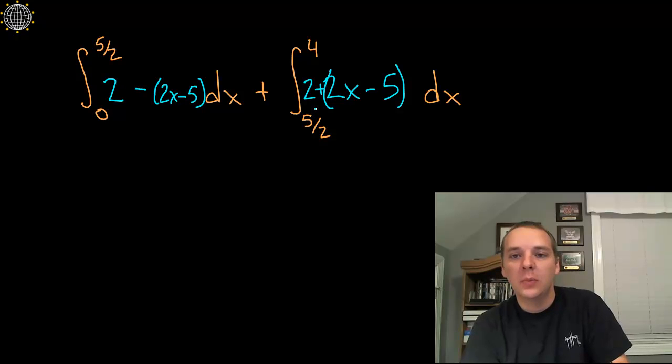So past 5 halves the absolute values are irrelevant, so I basically just drop them. But before 5 halves I need to manually change the sign of this term. Not of the whole expression—this 2 doesn't depend on the absolute value—but I do need to change the sign of those terms.